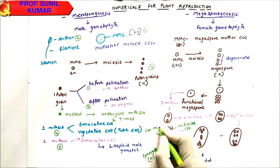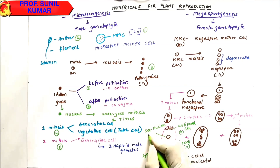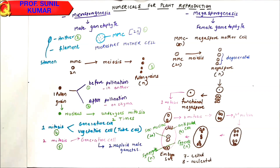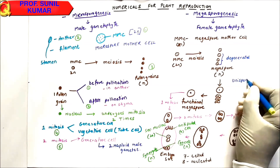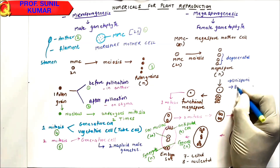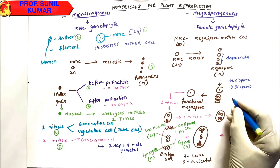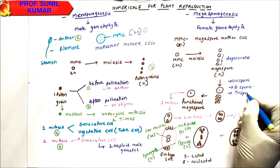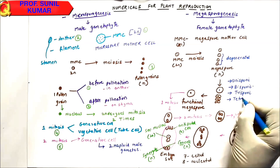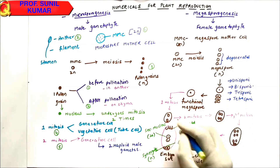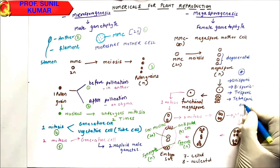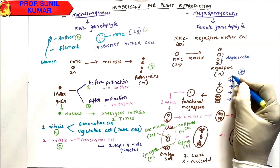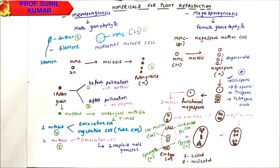In the center we have the secondary nucleus, also called the definitive nucleus — it is a two-nucleus, one-cell structure. To summarize: unisporic gives one functional mega spore, bisporic gives two, trisporic gives three, and tetrasporic means all four develop as functional mega spores. If nothing is specified, we assume it is a unisporic ovule.